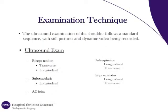The ultrasound examination of the shoulder follows a standard sequence with still pictures and dynamic video being recorded. The ultrasound exam consists of imaging five key components: the biceps tendon, the subscapularis, the acromioclavicular joint, the infraspinatus, and the supraspinatus. These structures are imaged in different planes to provide a detailed and accurate assessment of each anatomic structure.